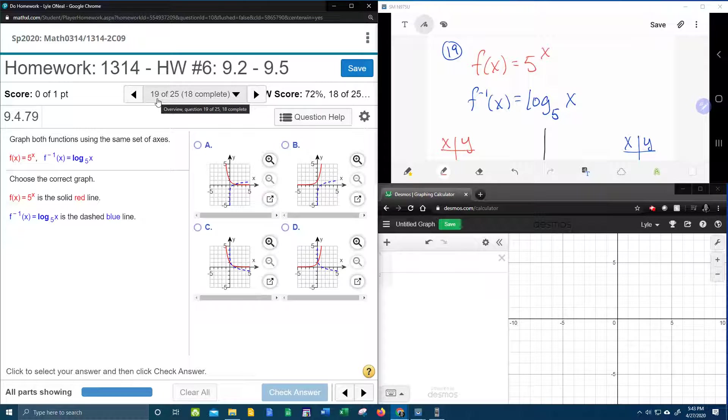Alright here we go, question number 19 in our college algebra homework number 6 in MyLab Math. It says to graph both functions using the same axis, that means one coordinate system.